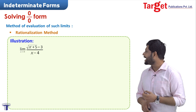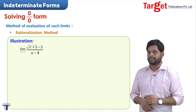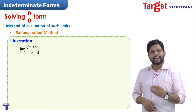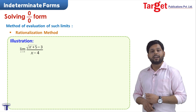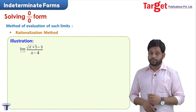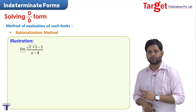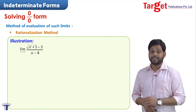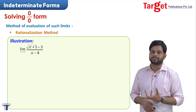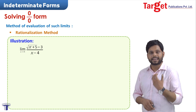For the rationalization method, we encounter questions where we get the 0/0 form, but those questions cannot be solved only by the factorization method. In such cases we use the rationalization method. For example, I have root of x plus 5 minus 3 upon x minus 4, with x approaching 4. Substituting x equal to 4 gives root of 9 minus 3 upon 4 minus 4, again the 0/0 form.